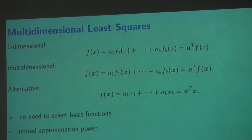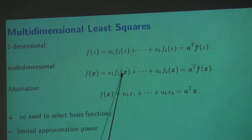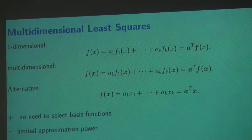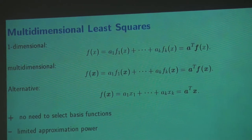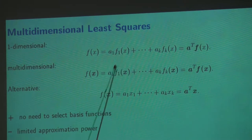Now we can, without any additional effort, make the whole thing multidimensional. We replace our scalar X by a vector X. For determining the coefficients, we still have the same problem. Because now these basis functions are multidimensional functions — they accept a vector as an argument but return a scalar as the result. So you have a scalar here the same as before, and the whole method works in the same way.